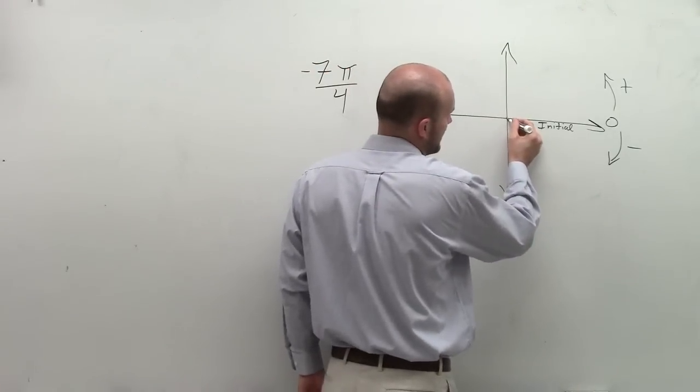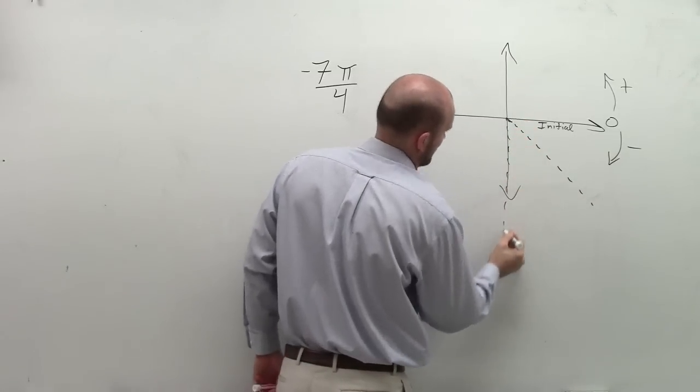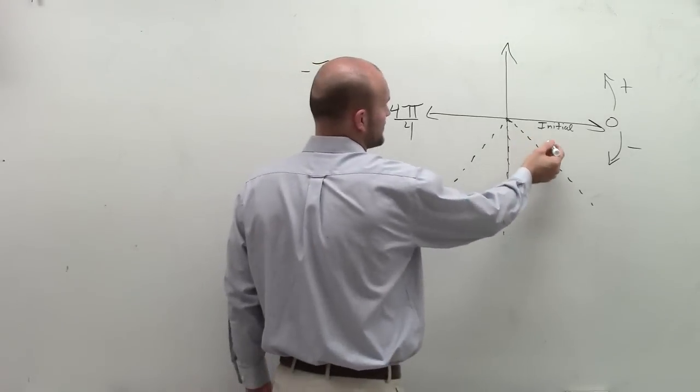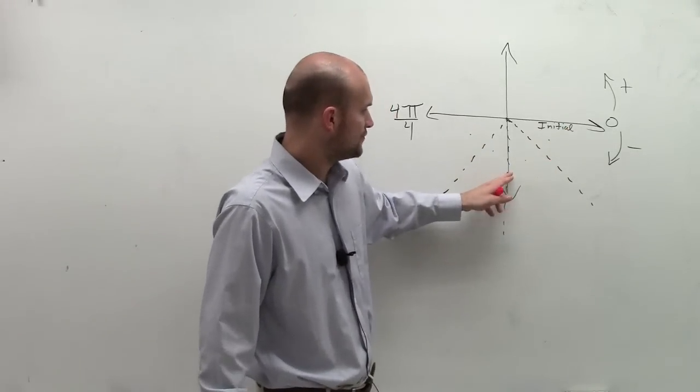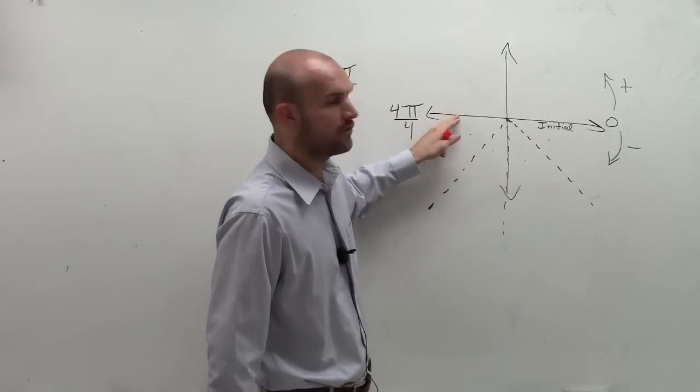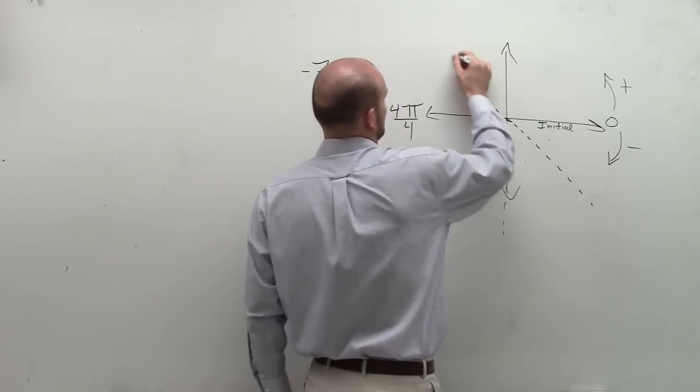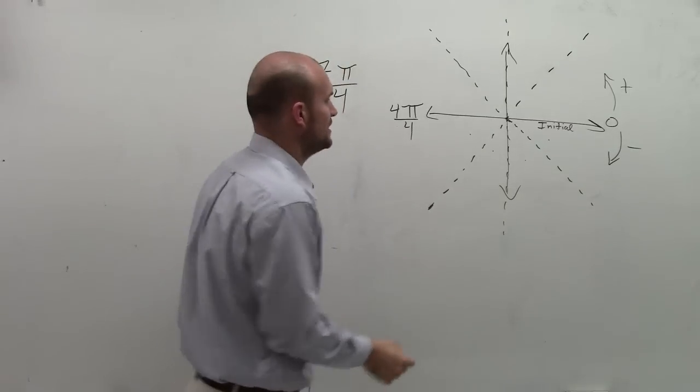So you can see I've broken this up now into four different sections. So I have here's 1 fourth, 2 fourths, 3 fourths, 4 fourths. You can do the same thing for the top section.